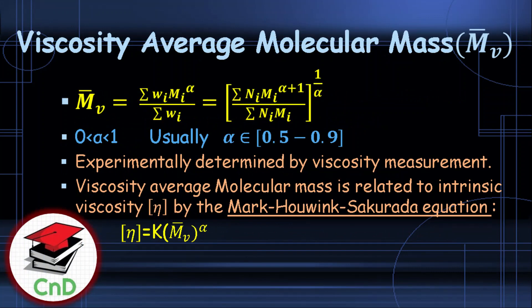The viscosity average molecular mass is the summation of w_i·m_i^α divided by the summation of total weight. Experimentally, this is determined by viscosity measurement. The intrinsic viscosity equals a constant k multiplied by the viscosity average molecular mass raised to the power α, where intrinsic viscosity is determined by the Mark-Houwink-Sakurada equation.